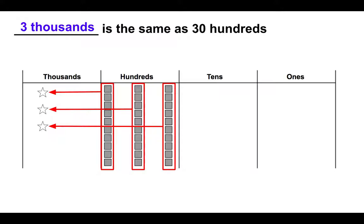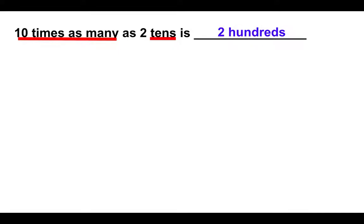Hopefully, you can get to the point where you do not need to draw this chart. Say you're given a question like this, ten times as many as two tens is what? Well, what you might think to yourself is ten times as many means I'm going to move over one place value from the tens. What's right next to the tens place? Yeah, it's the hundreds. So, ten times as many as two tens is just two hundreds.